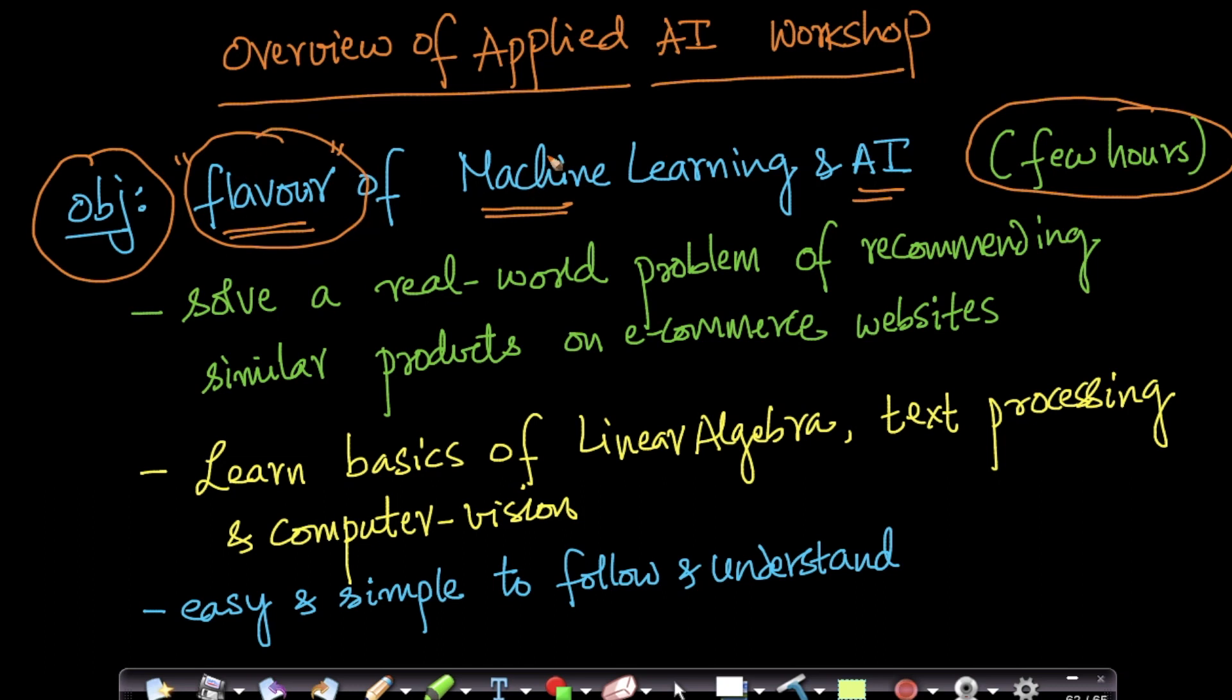You'll understand what's involved in solving a real-world problem using machine learning and AI. In this course, we solve a real-world problem of recommending similar products on e-commerce websites. On e-commerce websites like Amazon or Flipkart, if you're on a product page, it shows similar products below. These are products similar to the actual product page you're on.